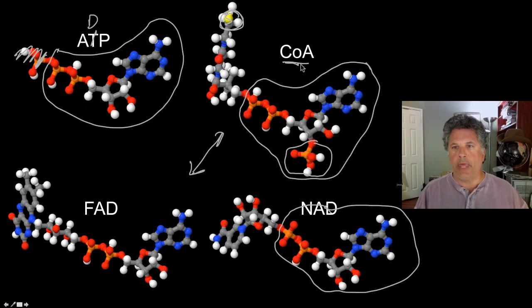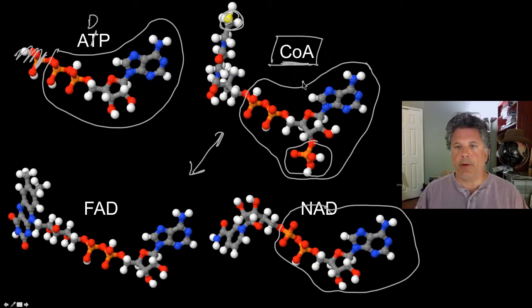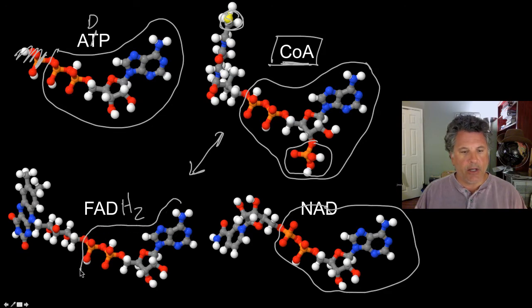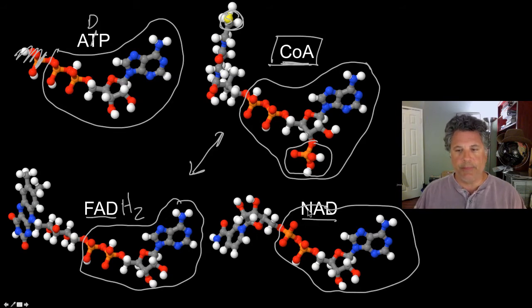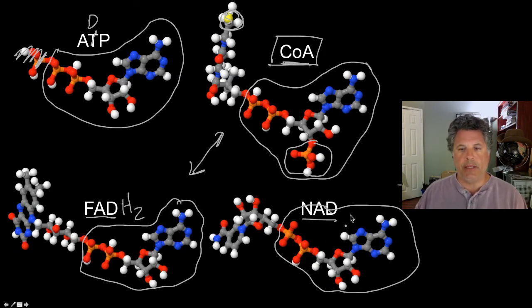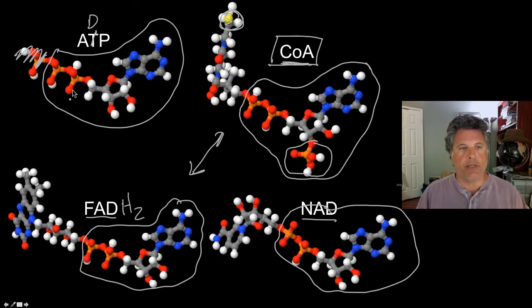That sulfur will be key in the role that coenzyme A plays in shuffling two-carbon intermediates around — we'll see coenzyme A as a key player. FAD can be reduced, just like NAD+ can be reduced, FAD can be reduced to FADH2. And FAD also has the root of ADP as its base with another structure similar to NAD but slightly different. So both FAD and NAD are great electron transporters — they can accept electrons, act as cofactors to enzymes, and donate electrons to oxidize compounds. It's interesting to note that the root base structure for all these molecules is ADP, which points to a common evolutionary origin.